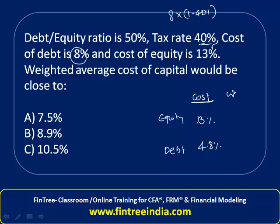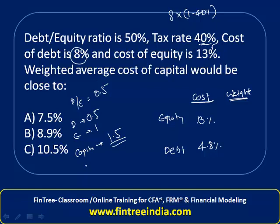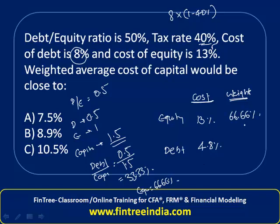Step two is to calculate weights. The debt divided by equity ratio is given as 0.5, which means if debt is 0.5, equity should be 1, making total capital 1.5. So the weight of debt is 0.5 / 1.5 = 33.33%, and therefore the weight of equity is 66.66%.